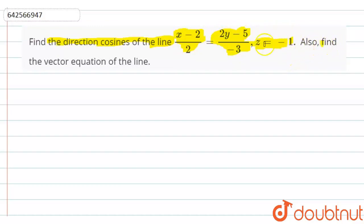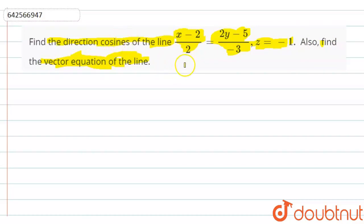They have asked us to find the vector equation of the given line. So, they have asked us to find the vector equation as well as the direction cosines of the given line.